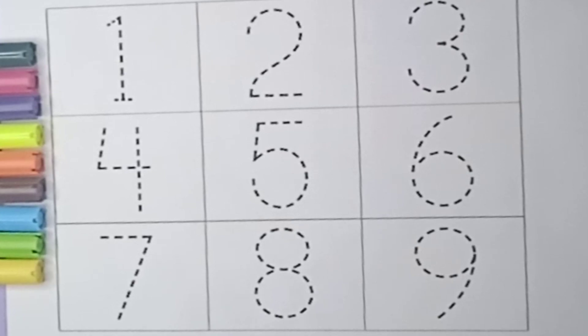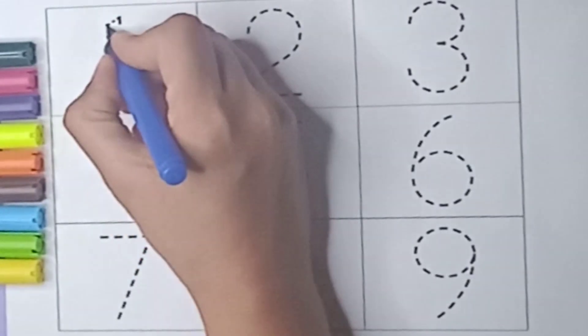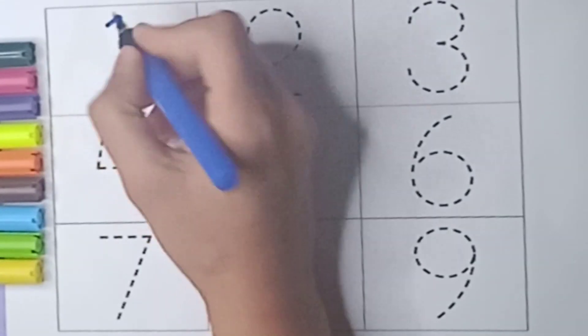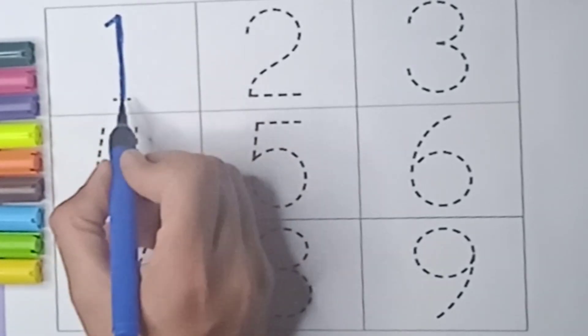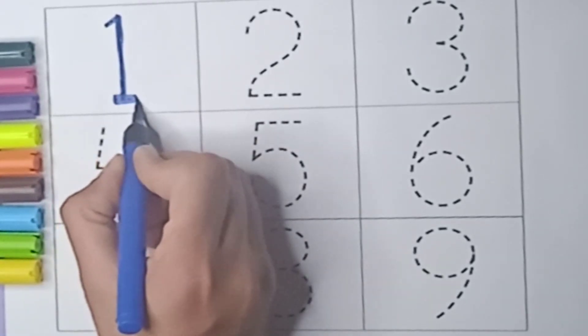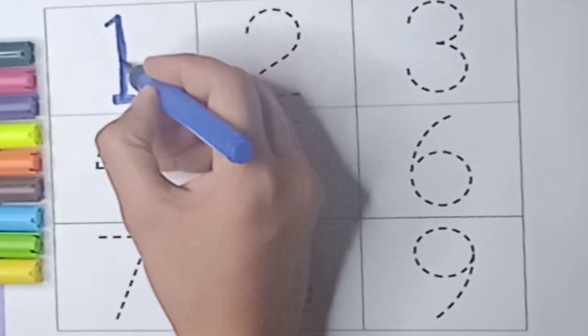Start from 1, blue color. First slanting line, and now standing line and sleeping line. It's 1.